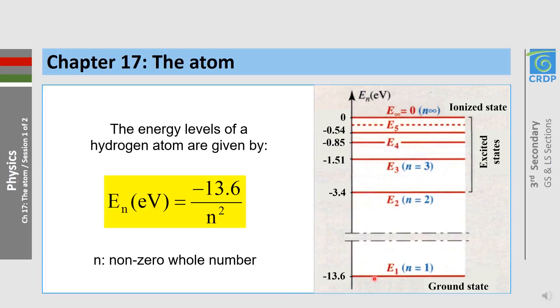The energy required for the transition from E1 to E∞ is called the ionization energy.